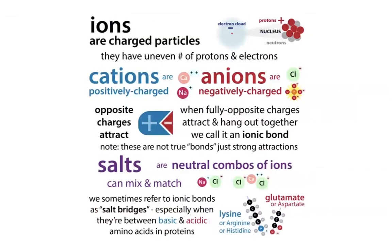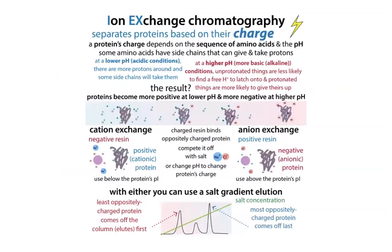An ion is just a word for a charged thing. Cations are positively charged and anions are negatively charged. A salt is a neutral combination of ions — for example, sodium chloride has sodium ions and chloride ions. In cation exchange, we're dealing with a cationic, that is positively charged, protein. We often call these proteins basic because they contain a lot of the basic amino acids: lysine, arginine, and histidine, which can be positively charged.